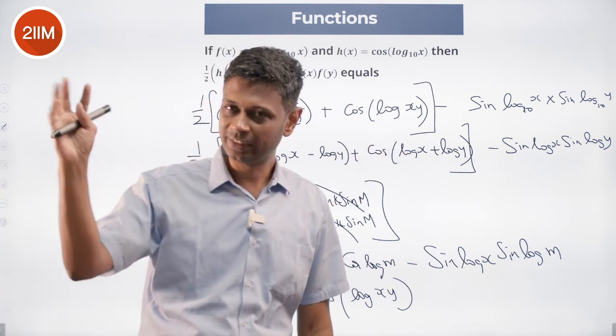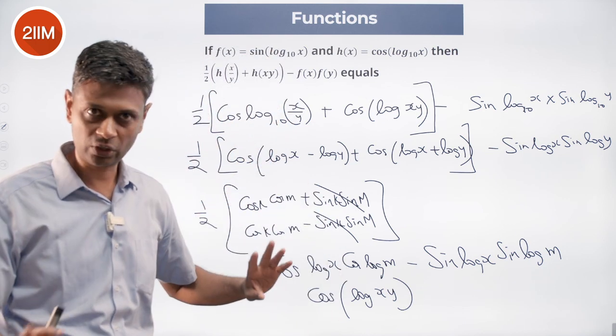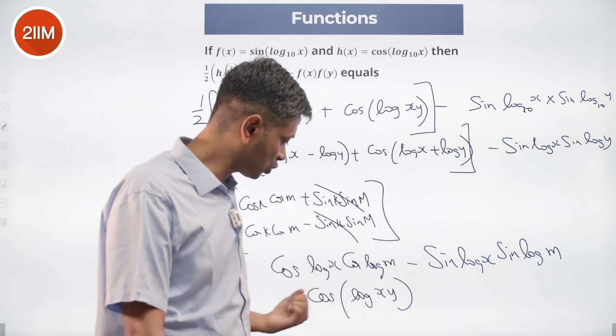cos a cos b minus sin a sin b—sin a sin b disappears. I have half of 2 cos a cos b, which is cos a cos b. Finally I have cos a cos b minus sin a sin b, which is cos...